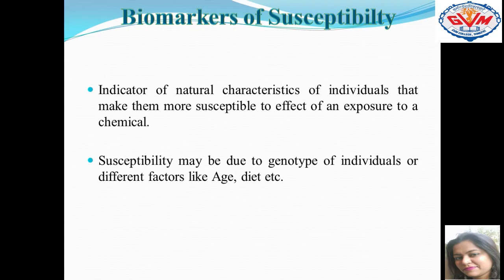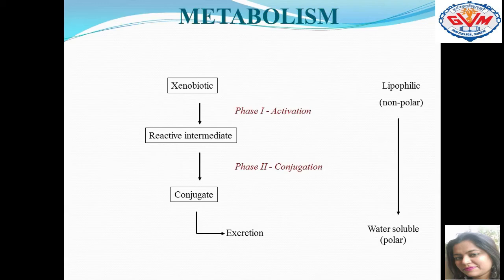The third is the biomarker of susceptibility. Susceptibility refers to how the individual's genotype will react with these chemical agents at the genetic level. Age factors and diet factors are definitely going to affect this. We then study the general metabolism of these toxic chemicals.